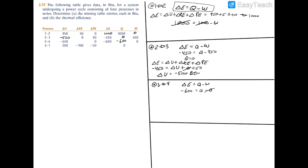Next we need the change in kinetic energy. Using delta E equals delta U plus delta KE plus delta PE, we substitute: negative 600 equals negative 650 (internal energy) plus delta KE plus 0 (potential energy). Adding 650 to both sides gives delta KE equal to 50 BTU.